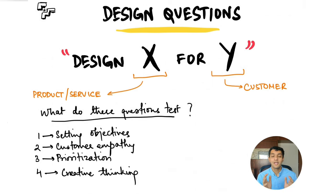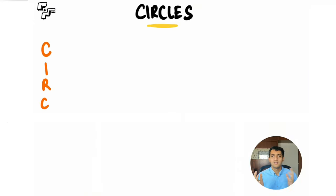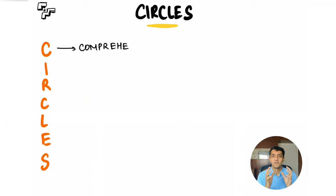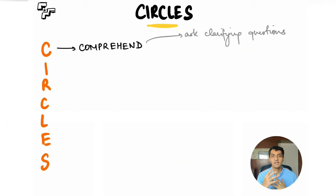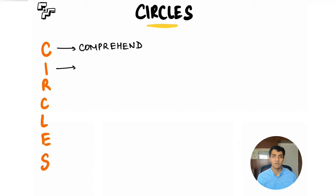Following the CIRCLES method helps you cover each of these four areas in a structured manner and ensures you don't forget any steps when answering in an interview. CIRCLES is basically a seven-step acronym. Whenever you're given a design question, the first step is to take a step back and comprehend the situation — understand what you're in, ask clarifying questions, and resolve any doubts.